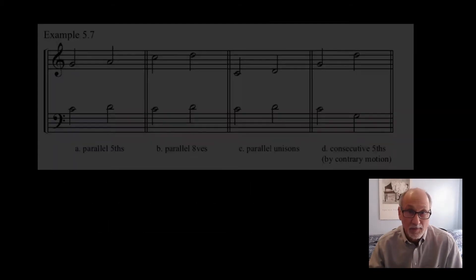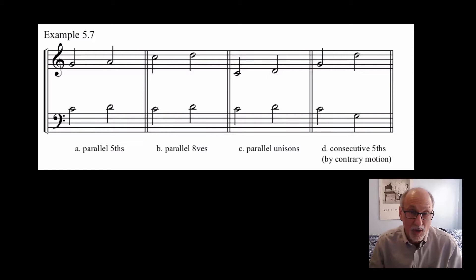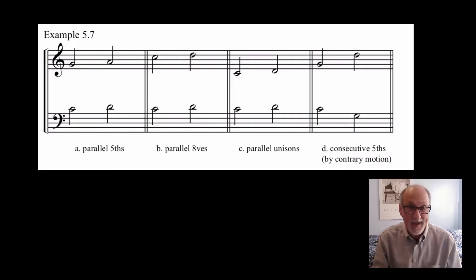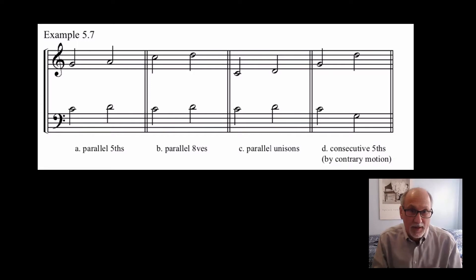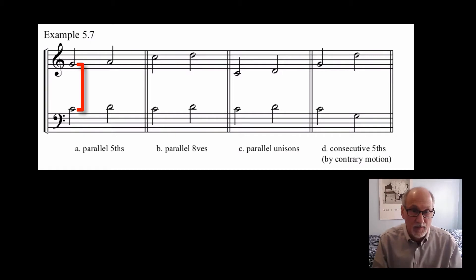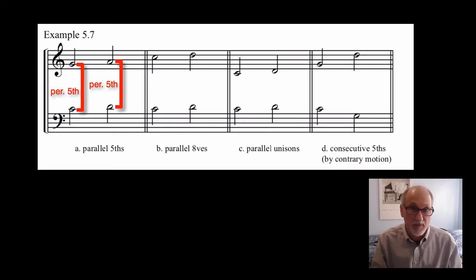So here's some examples. To make it easier here, we haven't included all four voices — we're just including a couple of voices, the soprano and the tenor. And it's a mistake in each case. So the first one: C and G moving to D and A. The first interval is a perfect fifth, the next interval is a perfect fifth. That would be considered a mistake.